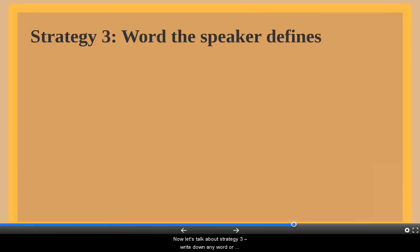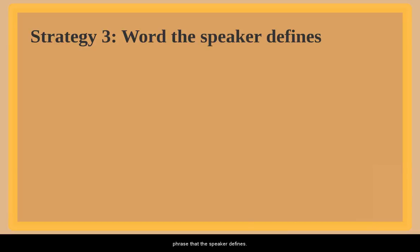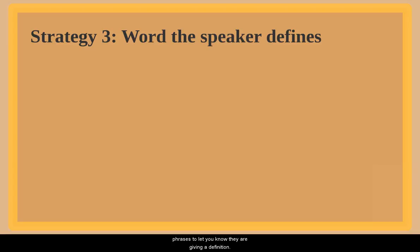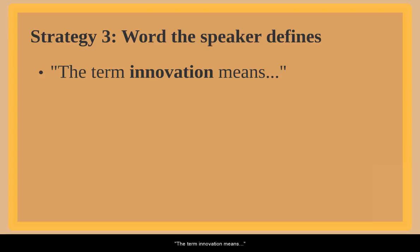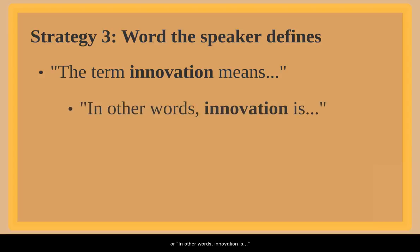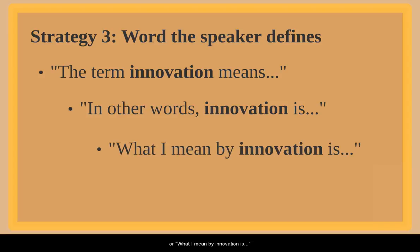Now let's talk about strategy three: write down any word or phrase that the speaker defines. Speakers only do this when they want to be really sure you understand. They use common phrases to signal a definition, so you can learn to listen for them. For example, they might say: 'The term innovation means...', 'In other words, innovation is...', or 'What I mean by innovation is...'